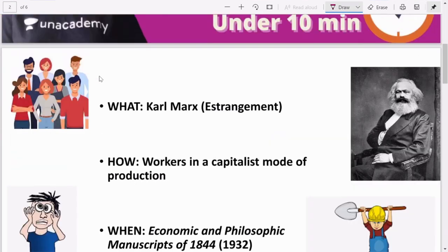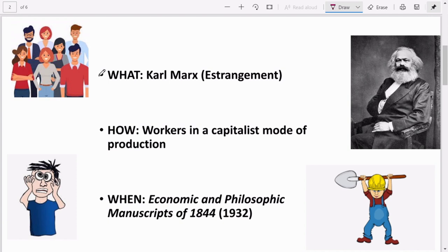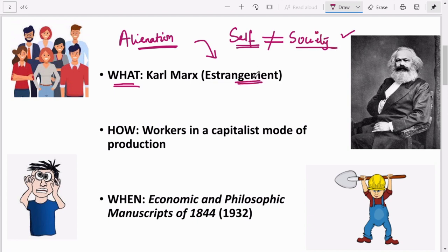So first we will see what, how, and when. The first thing you have to know about this theory is that it is given by Karl Marx. The literal meaning of this term is estrangement - meaning that you do not feel connected with the rest of society. You consider yourself a stranger. In other words, you can write disconnected or extreme frustration as synonyms for alienation.